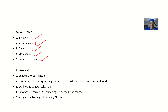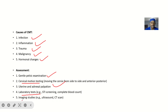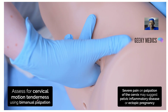For assessment — other things you can do to assist in making a good diagnosis — you could follow up with a gentle pelvic examination, do cervical motion testing by moving the cervix side to side and anterior to posterior, and perform uterine and adnexal palpation. You could also do laboratory tests like STI screening and a complete blood count. Imaging studies like CT scan or ultrasound can give you a good look at what's inside.